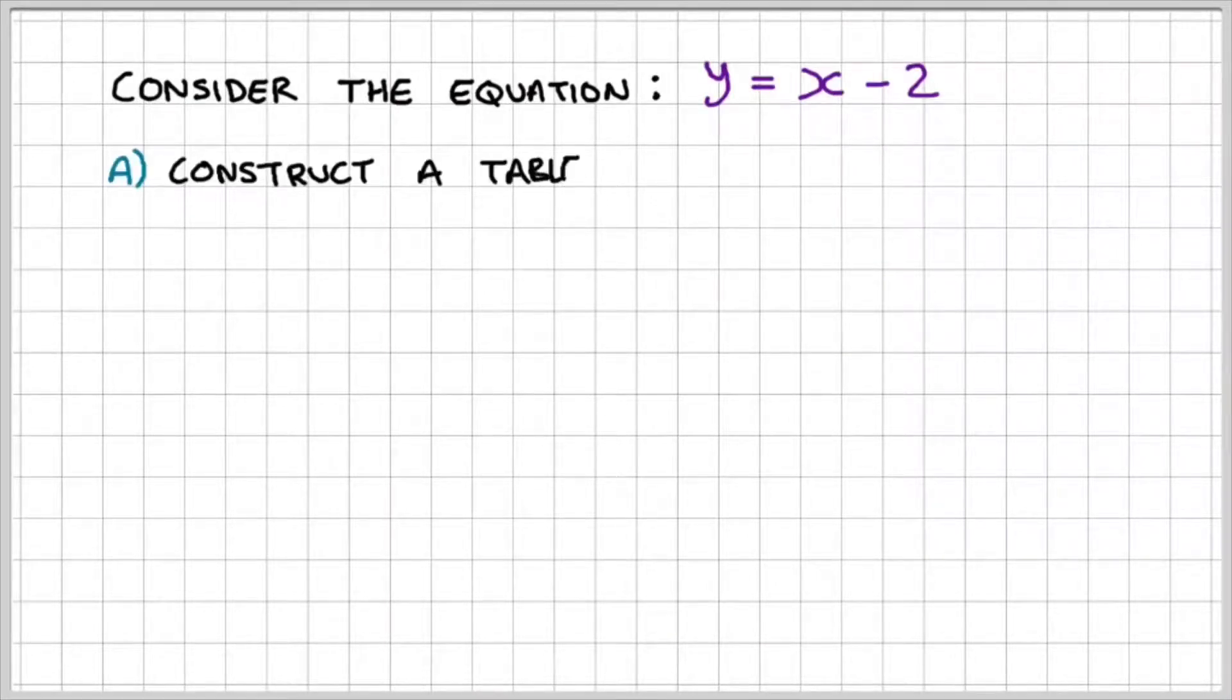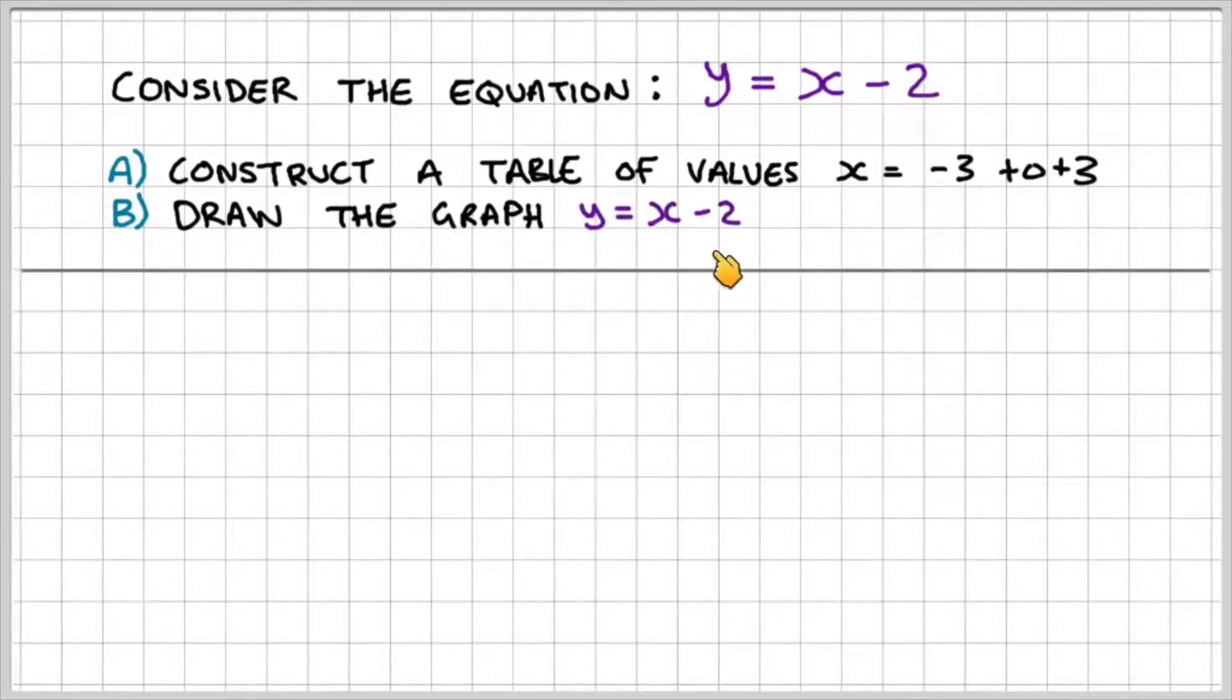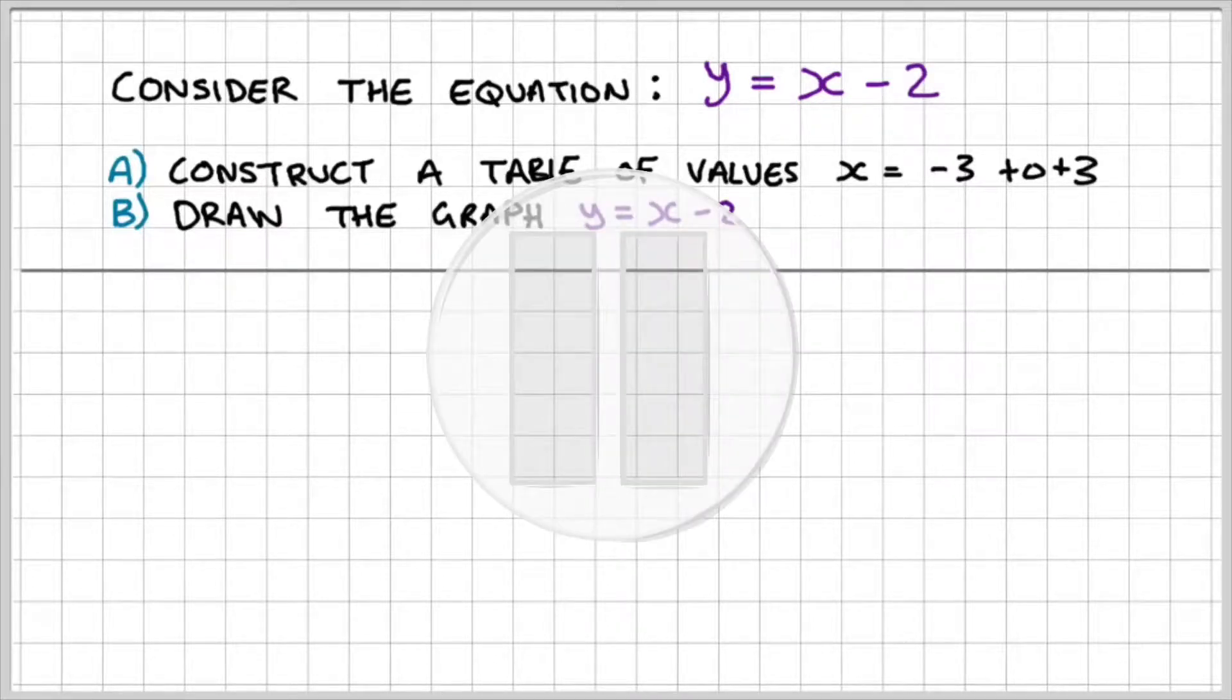So let's do an example where we consider the equation of a line y equals x minus 2. Part A, construct a table of values where x is from negative 3 to 3. And part B, draw the graph of the equation y equals x minus 2. Pause the video here and have a go yourself.